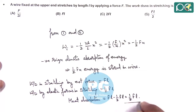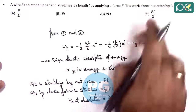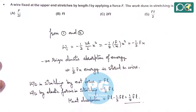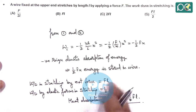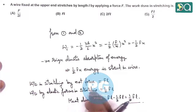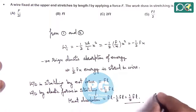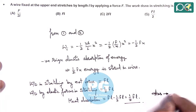So we can state: work done in stretching by elastic forces is half FL, so the answer should be D. Whereas the total work done in stretching as well as work against heat dissipation is FL. So the answer to this question should be taken as Option D.